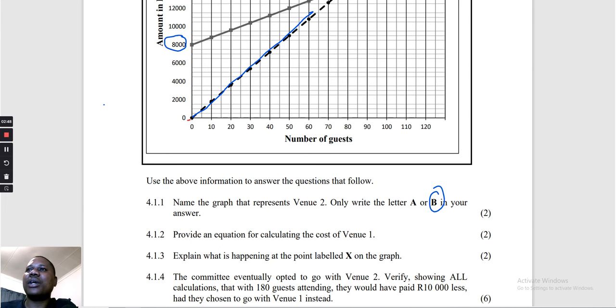Provide an equation for calculating the cost for venue A. Like I said, they give us 8,000 as a fixed amount that we must be paid. This 8,000 doesn't cover people. Maybe it's for booking us a space, plus 80 rand multiplied by number of people. Then this is the formula to calculate the total cost.